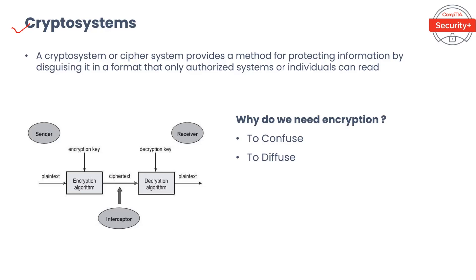Related to cryptography, an algorithm is a mathematical procedure or sequence of steps taken to perform encryption and decryption. You can think of an algorithm as a cooking recipe — the ingredients needed and step-by-step instructions. Algorithms are used in conjunction with a key for encryption and decryption.